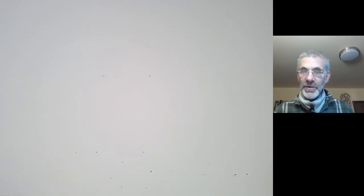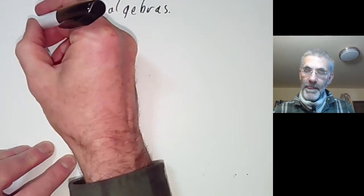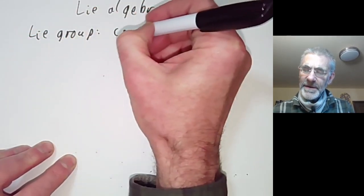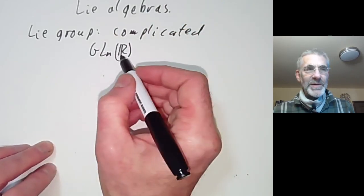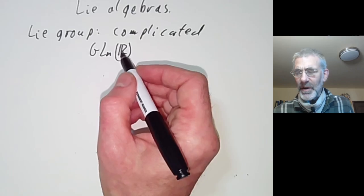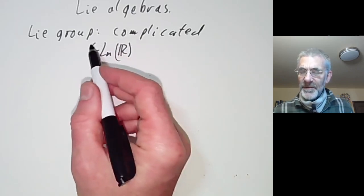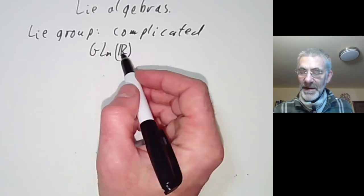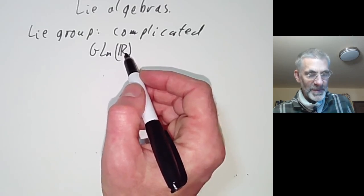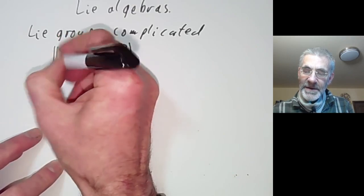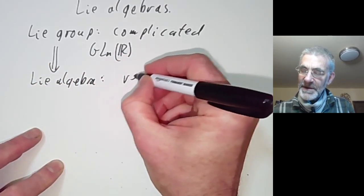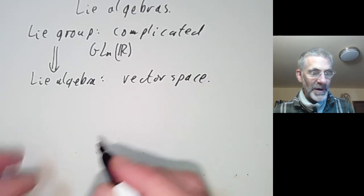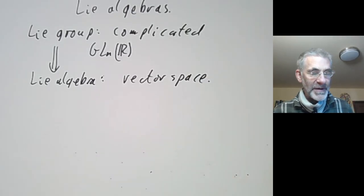This lecture is part of an online course on Lie groups and will be about Lie algebras. The problem with a Lie group is that it's kind of complicated. For example, the group GL_n over the reals consists of matrices with non-zero determinant, and the determinant is a quite complicated function. It's a fairly complicated topological space with non-trivial homology groups. The idea is to replace the Lie group by something simpler — a Lie algebra — which is easy to visualize because it's just a vector space with some extra structure, a linear object we can study with linear algebra.